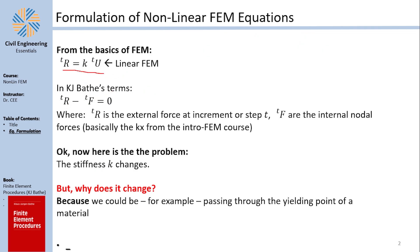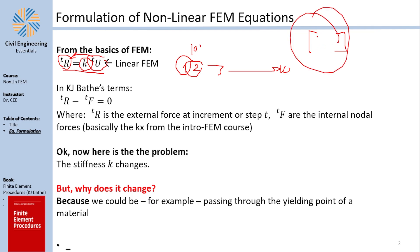The core problem is that the stiffness K is changing. R depends on the increment, U depends on the load and thus the increment — but K, which was constant in basic FEM, is no longer constant. Previously you would calculate the stiffness matrix of a bar element and use it regardless of load magnitude, but that is no longer correct.